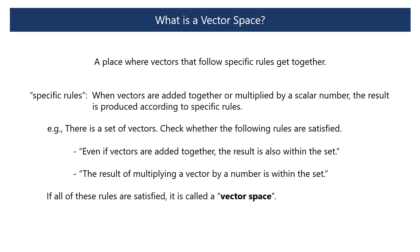A vector space, also called a linear space, is a place where vectors that follow specific rules come together. These specific rules mean that when vectors are added together or multiplied by a scalar number, the result is produced according to specific rules. For example, suppose there is a set of vectors. We check whether adding vectors together keeps the result within the set, and whether multiplying a vector by a scalar keeps the result within the set. If all of these rules are satisfied, it is called a vector space.